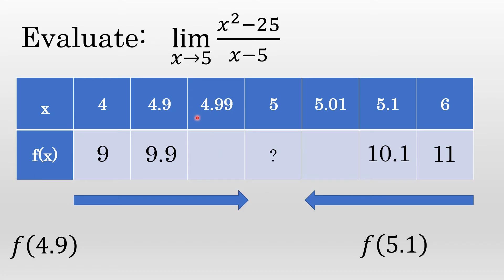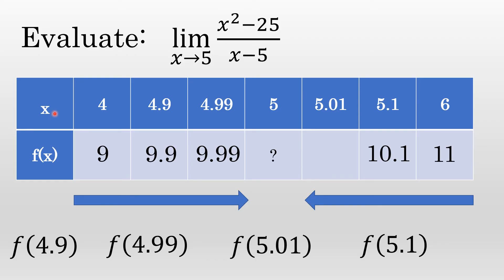Let's be sure. Let's go to the number only a hundredth below 5 and only a hundredth above 5. f of 4.99 is actually 9.99 — it's getting closer to 10. How about a number a hundredth larger than 5? f of 5.01: 5.01 squared minus 25 over 5.01 minus 5 is 10.01.